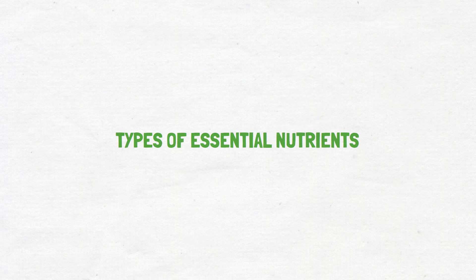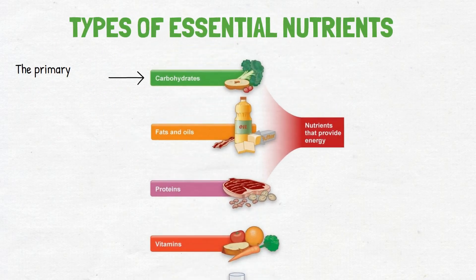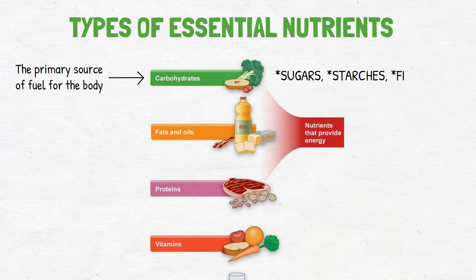Types of essential nutrients include carbohydrates, which are the primary source of fuel for the body, especially the brain. There are three main types of carbohydrates: sugars, starches, and fiber.